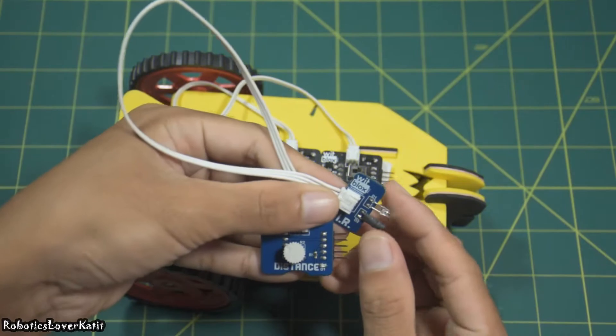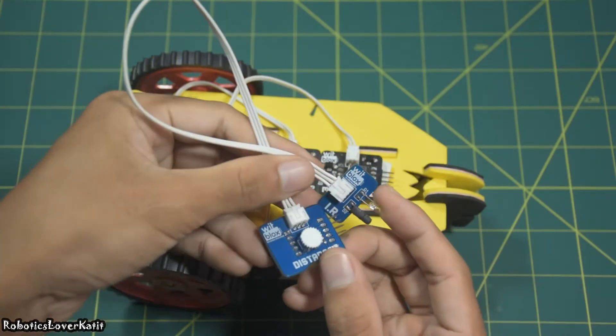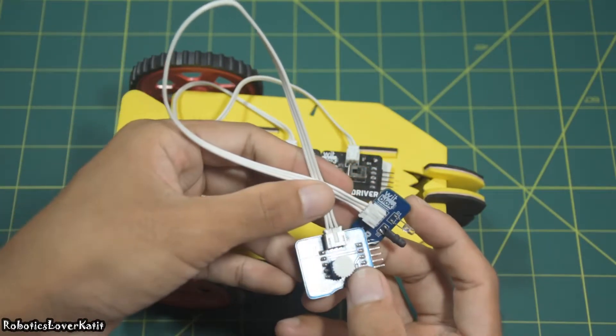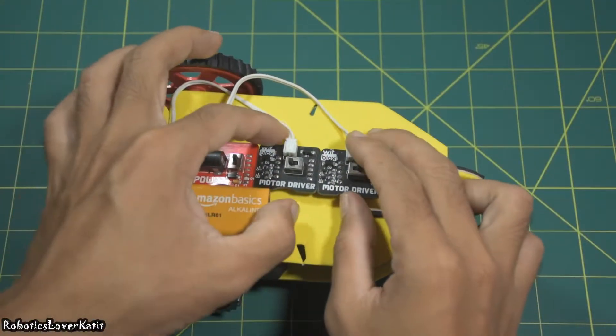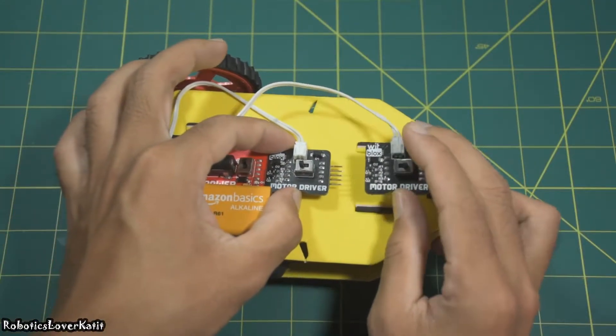Now let's make a cliff avoider robot. You will need distance blocks for making a cliff avoider robot. First of all, connect left motor driver blocks and right motor driver blocks.